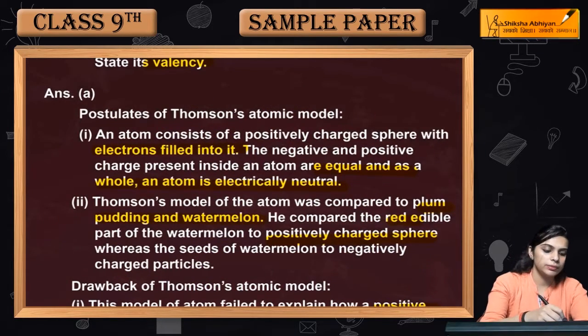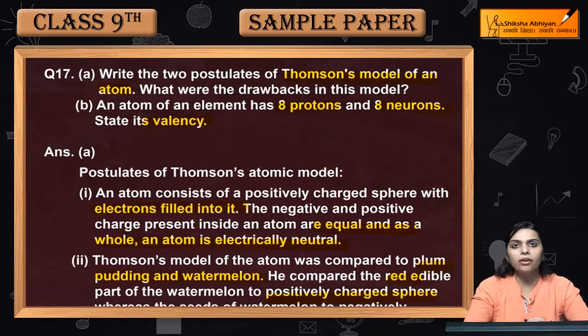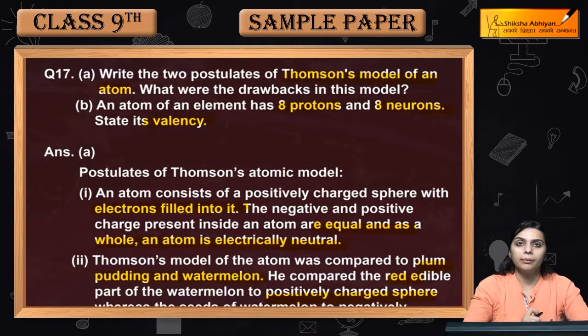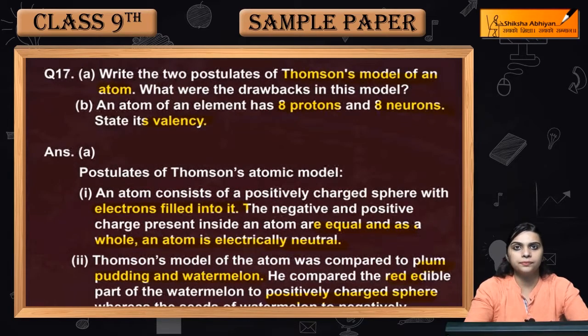So we covered Thomson's model postulates, their drawbacks, and how to find valency. If you are given the number of protons, neutrons, or electrons, you can determine valency this way. Okay, take care.